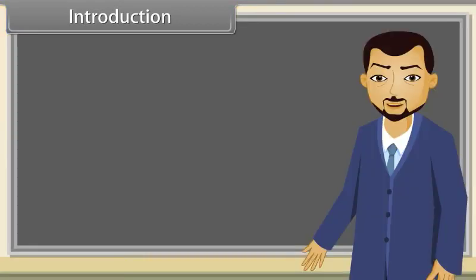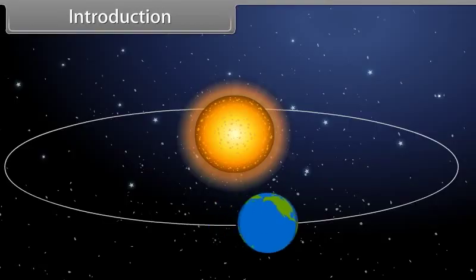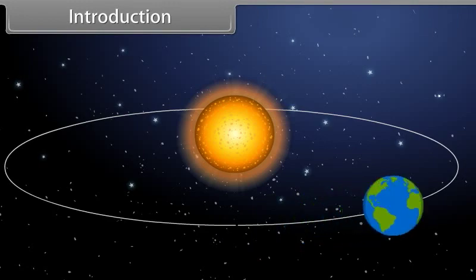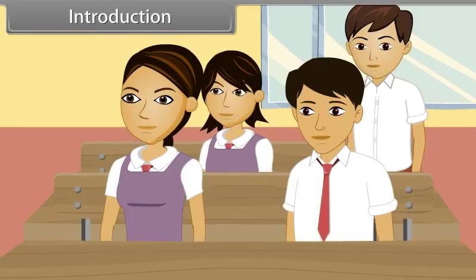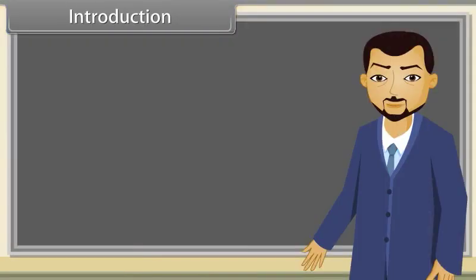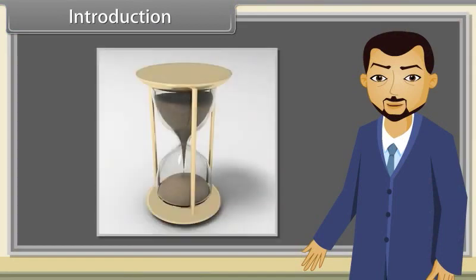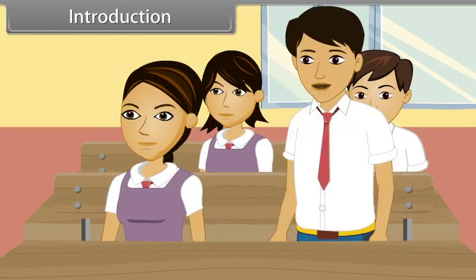Do you know what kind of path earth follows while revolving around the sun? Yes, it is elliptical in shape. So finally, who will tell me what kind of shape this object has? It has hyperbolic shape.